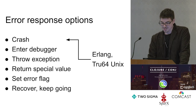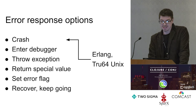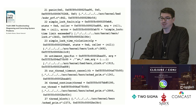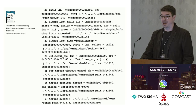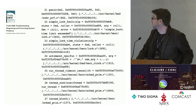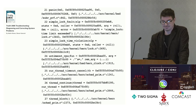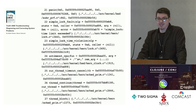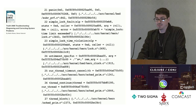Also, interestingly, True64 Unix — an older Unix operating system. If I remember correctly, even a single null pointer dereference would lead to the entire operating system crashing and producing stack traces that might even worry a Clojure programmer. This is an option that makes sense, and as it turns out, True64 is incredibly stable because the engineering team was motivated to prevent this from happening.